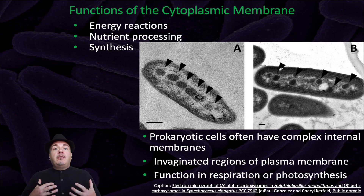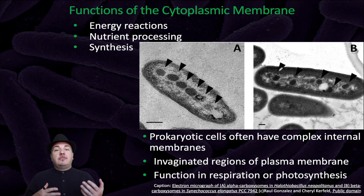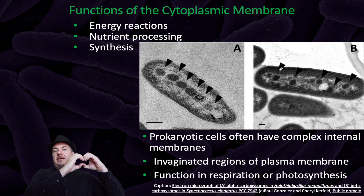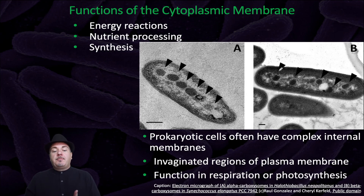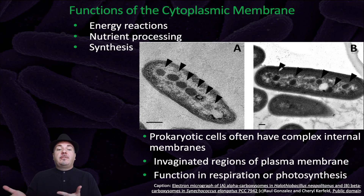Prokaryotic bacteria don't have membrane-bound organelles, so they can't have mitochondria for aerobic cellular respiration or chloroplasts for photosynthesis. But there are bacteria that can do aerobic cellular respiration and photosynthesis. How? The cytoplasmic or plasma membrane can invaginate or fold inward, and that membrane inside the cell can form complex internal membranes used for the same purpose as the membranes inside mitochondria and chloroplasts — that is, cellular respiration or photosynthesis.